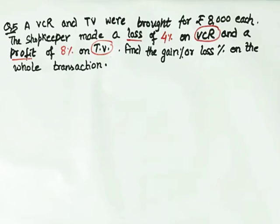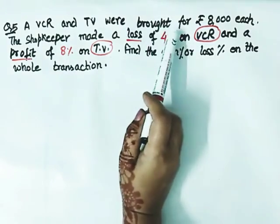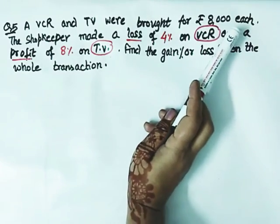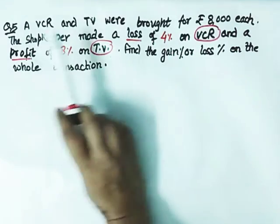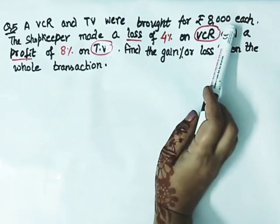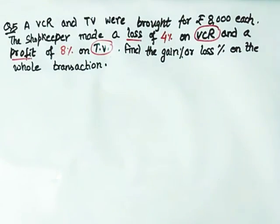Now let us come to the next question. This is question number 5. A VCR and TV were brought for 8,000 rupees each.